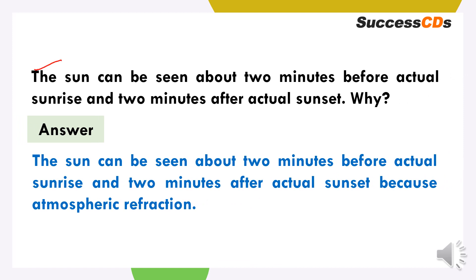The sun can be seen about two minutes before actual sunrise and two minutes after the actual sunset. This is because of atmospheric refraction. Jab bhi sun ki rays of light ko earth tak reach karna hota hai, usse various levels of gases se pass karna hota hai — one after another, it has to pass through various different kinds of gases, and therefore it causes atmospheric refraction and the bending of light.